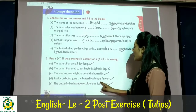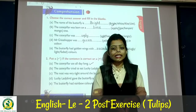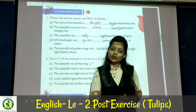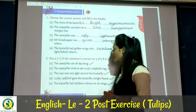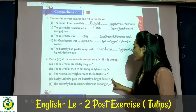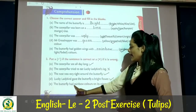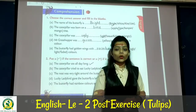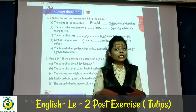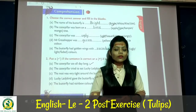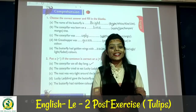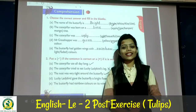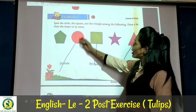Statement: Lucky Ladybird gave the butterfly a bright flower — this is right. Statement: the butterfly had rainbow colors on its wings — the butterfly's golden wings had rainbow colors, so this is also right. Now next is vocabulary on page number 20, where there are shapes.